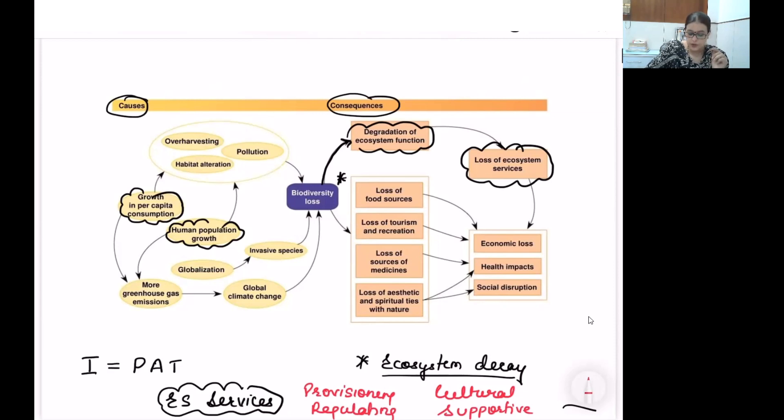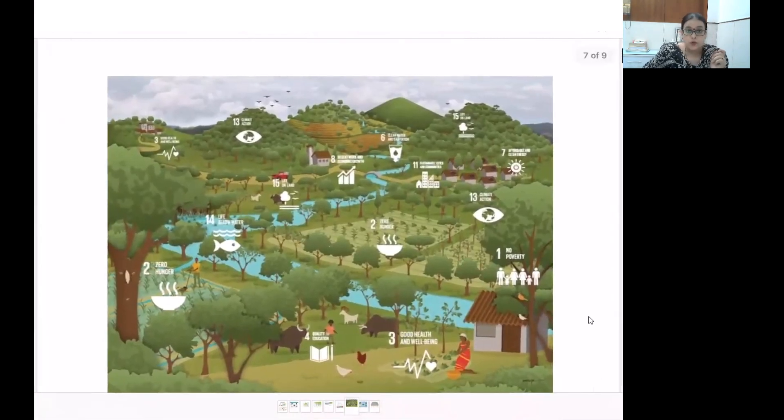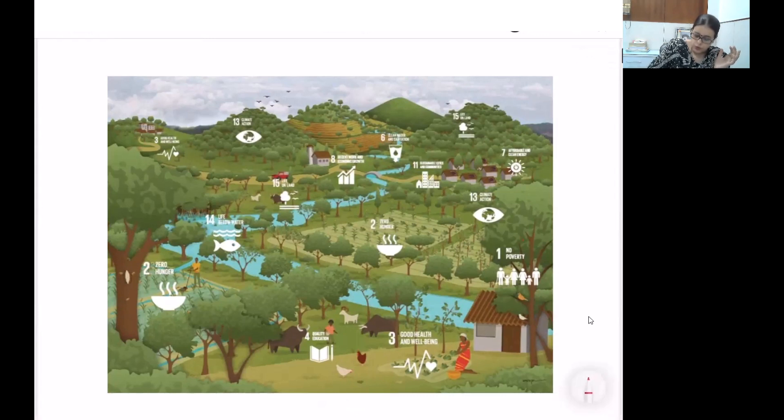To prove my point, let us integrate this with Sustainable Development Goals. I have selected this image from United Nations Development Programme showing SDGs 2030. Of all the SDGs, 16 and 17 are missing in this diagram; 15 are highlighted. How do you connect SDGs with ecosystem services? For example, to ensure no poverty, there must be sustenance of provisioning services. Provisioning services will ensure not just no poverty, but also zero hunger (SDG 2), and good health and well-being (SDG 3).